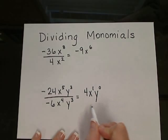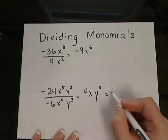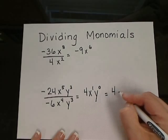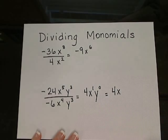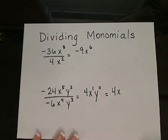A couple of little things here to clean this up. x to the 1st, we don't have to write that exponent, it's just understood. Even if we don't write the exponent of 1, it's understood to be there. And y to the 0 is really equal to 1. So we don't have a y in this expression, and 4x would be our final answer.